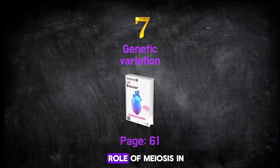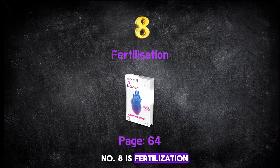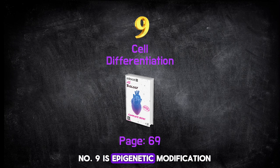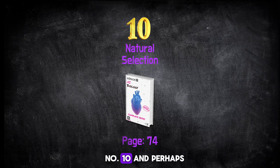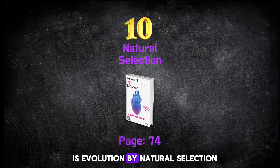Number seven is the role of meiosis in genetic variation. Number eight is fertilization in both plants and humans. Number nine is epigenetic modification and its role in cell differentiation. Number ten, and perhaps the most important topic, is evolution by natural selection.